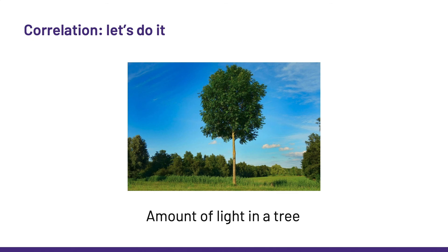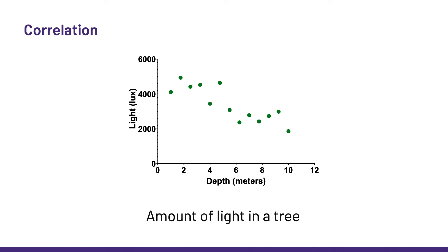Right, let's do it now. We are going to look at the relationship between the amount of light and the depth at which we measure it in a tree. And why not? First of all, as always, we start by looking at our data, and this is what we get, a negative relationship between the two variables. This is the association we want to quantify.